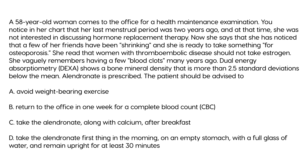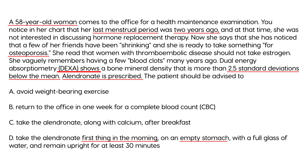A 58-year-old woman comes in for a periodic health maintenance exam. Her last menstrual period was two years ago. She was not previously interested in hormone replacement therapy, but now wants to take something for osteoporosis. She has a history of thromboembolic disease, so estrogen is contraindicated. Her DEXA scan shows bone mineral density more than 2.5 standard deviations below the mean. Alendronate is prescribed. The patient should be advised to take it first thing in the morning on an empty stomach with a full glass of water and remain upright for 30 minutes.